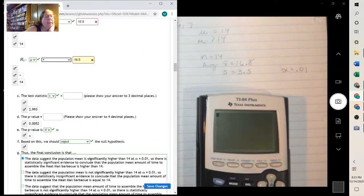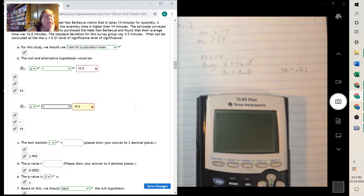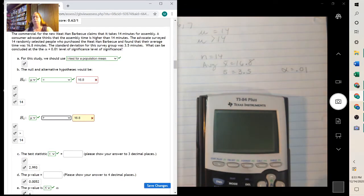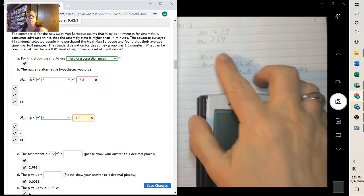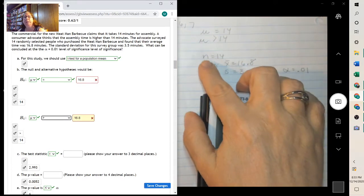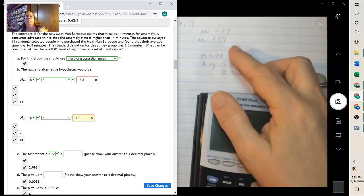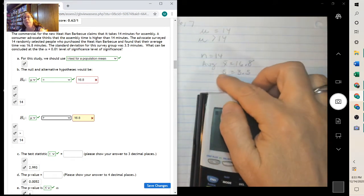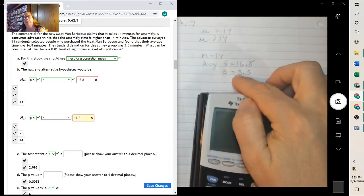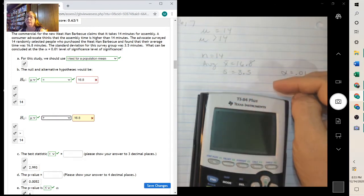Now to find the test statistic and the p-value. We are testing this, they did a sample of 14, which is small, so that already tells you t-value. But even if it was large, because the standard deviation is from the sample, you still have to use a t-test.